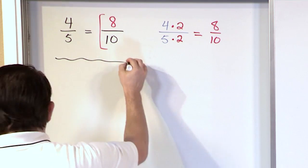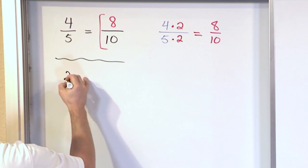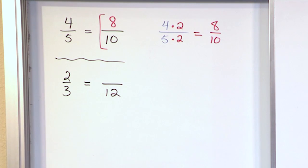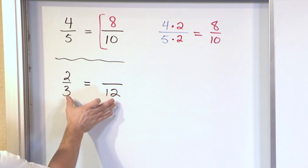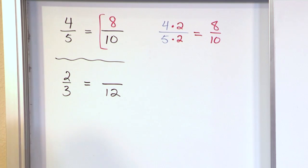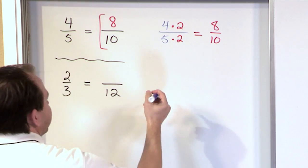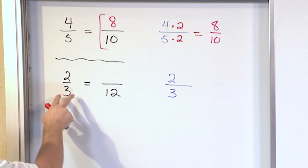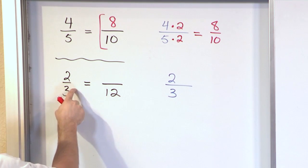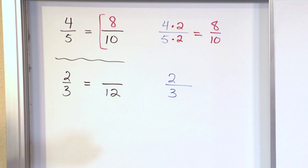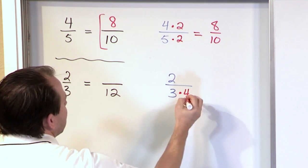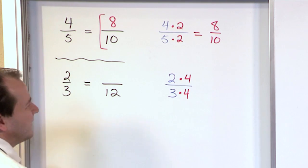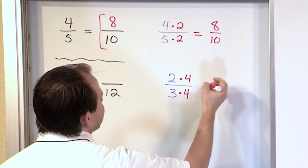Let's do another problem. Let's say that I have 2 thirds, and I'm claiming that's equal to another fraction with a bottom number of 12. I'd like to figure out what this fraction has to have on the top to make this happen. What I usually do is go off to the side and write my 2 thirds down, because that's what I'm starting with. I look at it and say, I'm trying to get from 3 to 12. What do I have to multiply to do that? 3 times what is going to give me 12? I'm going to have to multiply by 4, because 4 times 3 is 12. But if I do this, I'm also going to need to multiply by 4 on the top — that's the only way to keep it balanced. And 4 times 2 is 8.